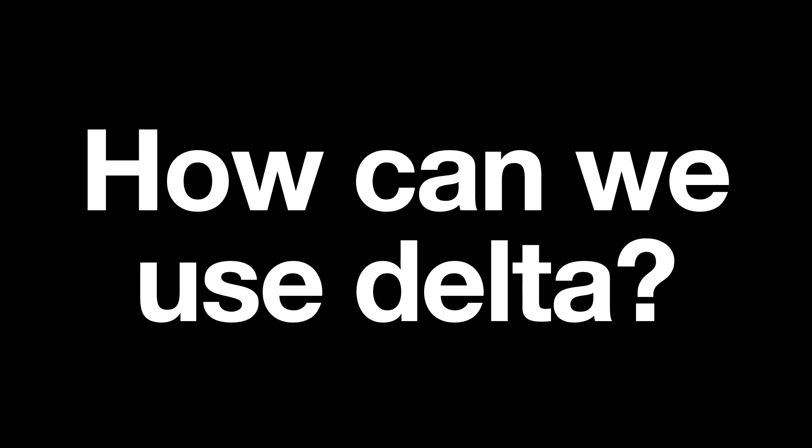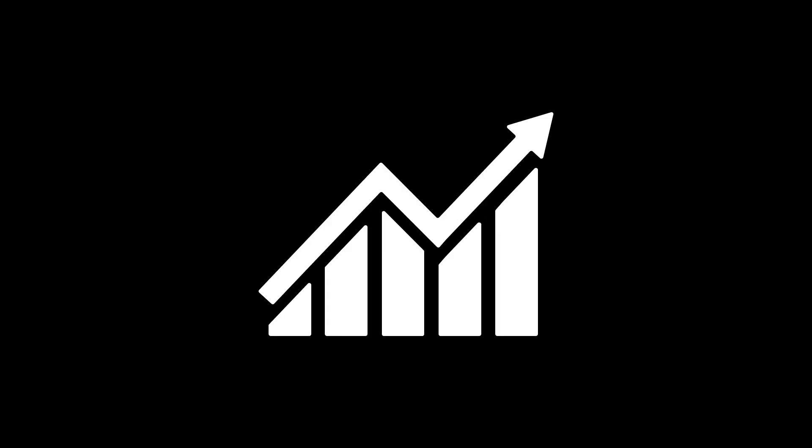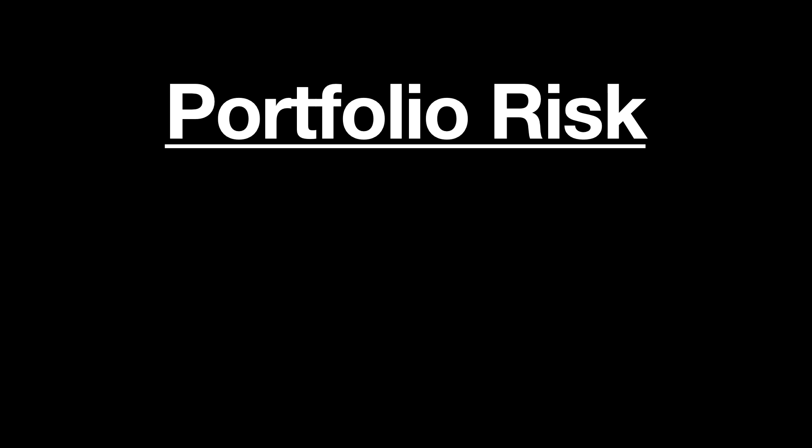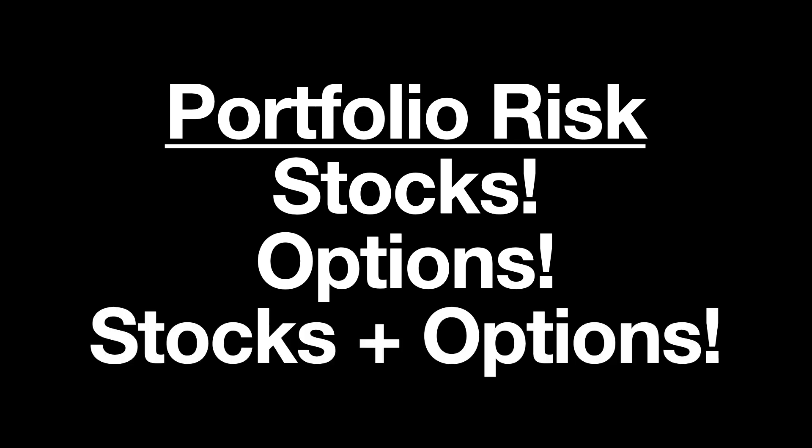How can we use Delta? For options trading, Delta can help us estimate the probability of an option expiring in the money. For example, an option with a Delta of 0.8 has a roughly 80% chance of expiring in the money. Delta can also be used to determine the risk of an entire portfolio by balancing the Delta values of different options, or even balancing options Delta against stock Delta. Stock Delta is easy because stock always has a Delta of 1 per share. So if you own one share of SPY, that share has a Delta of 1. If you own 100 shares of SPY, those shares have a Delta value of 100.